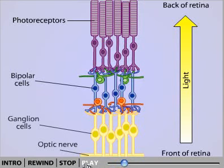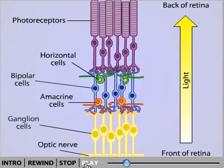Two other types of neurons, horizontal cells and amacrine cells, are primarily responsible for lateral interactions within the retina.